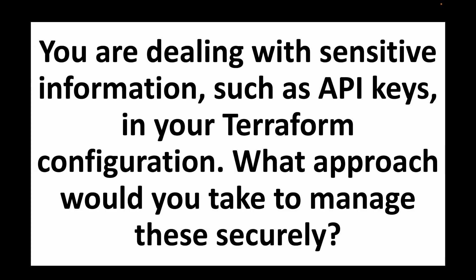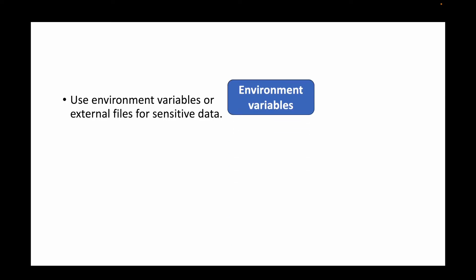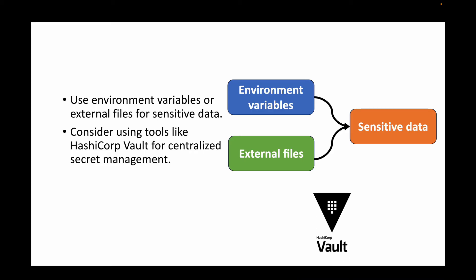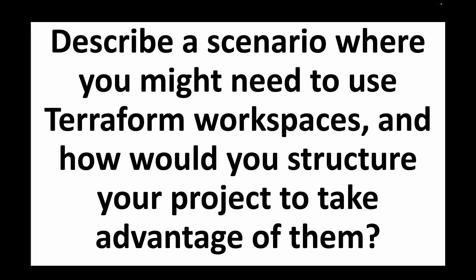The next question is: you're dealing with sensitive information such as API keys in your Terraform configuration — how would you manage this securely? It is always recommended not to hard-code sensitive information in configuration files. Instead, use environment variables or external files. You should also consider HashiCorp Vault for centralized secret management, or if you're on AWS, use AWS Secrets Manager to store secrets and fetch them in Terraform via a data source.